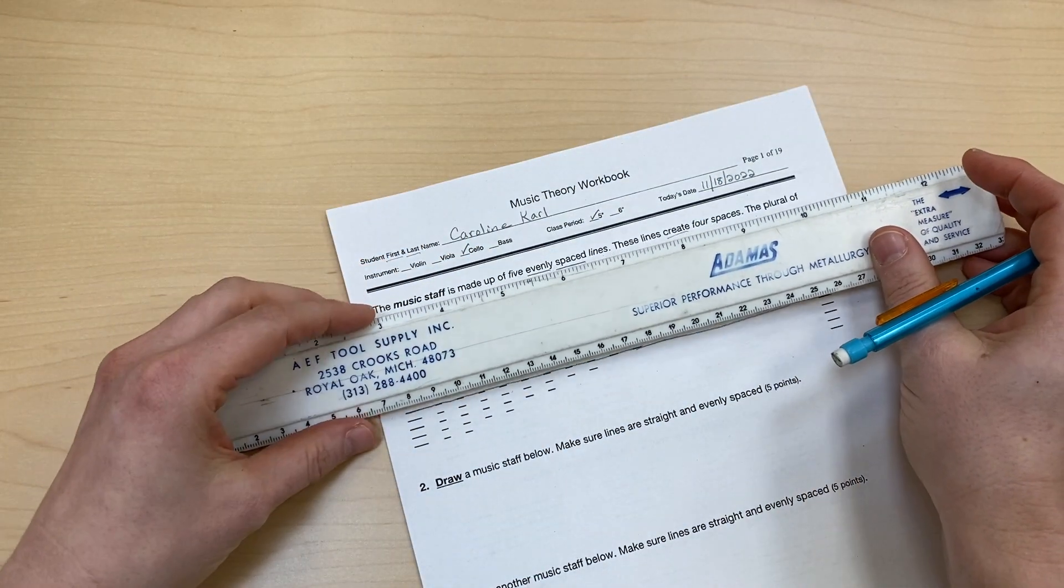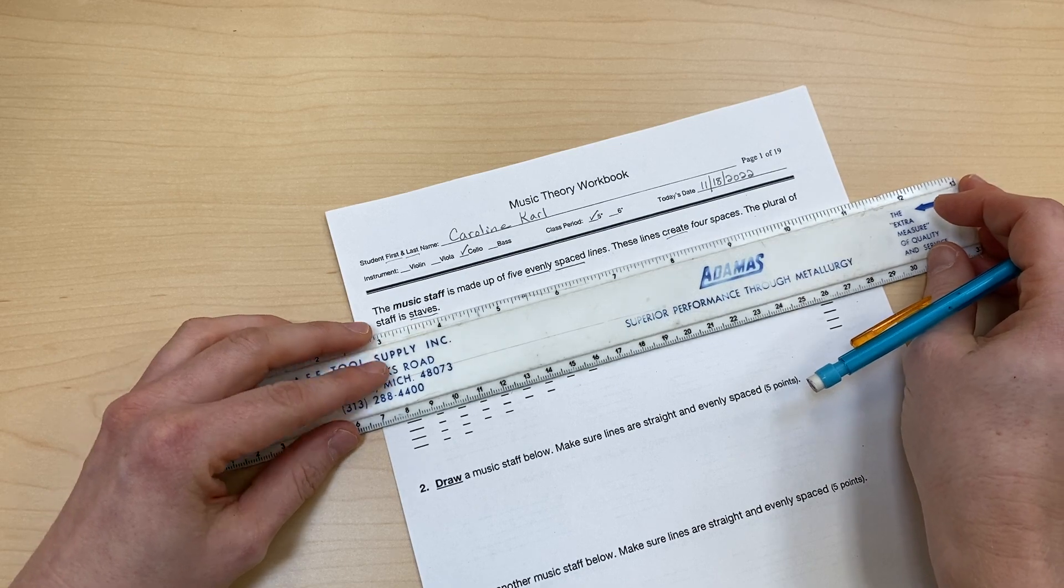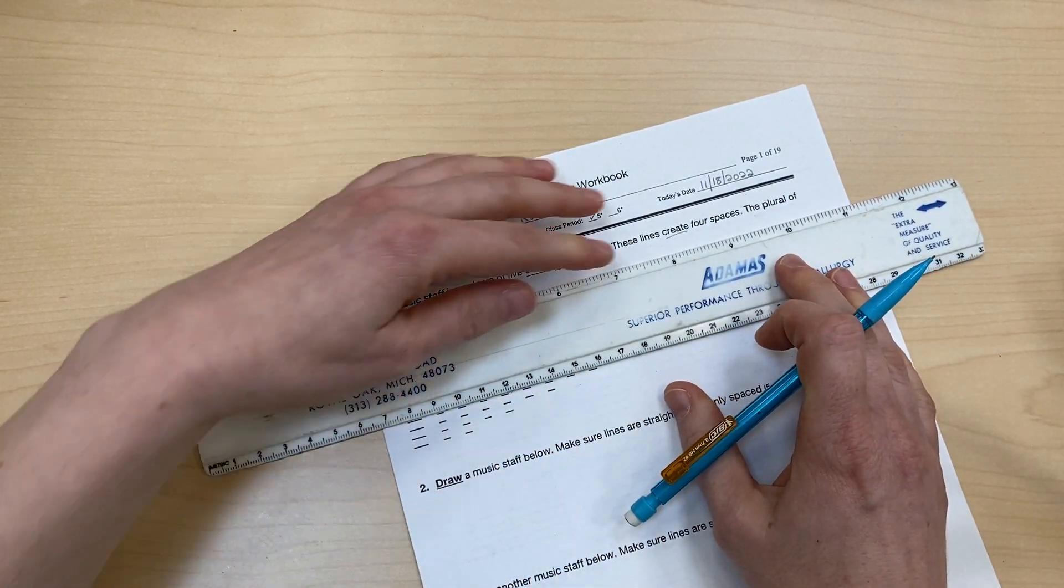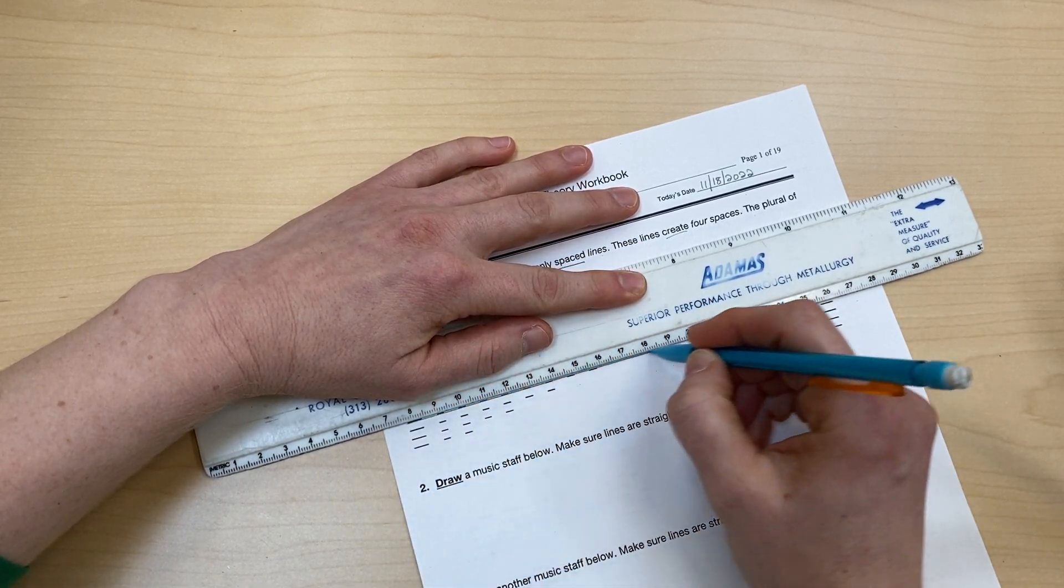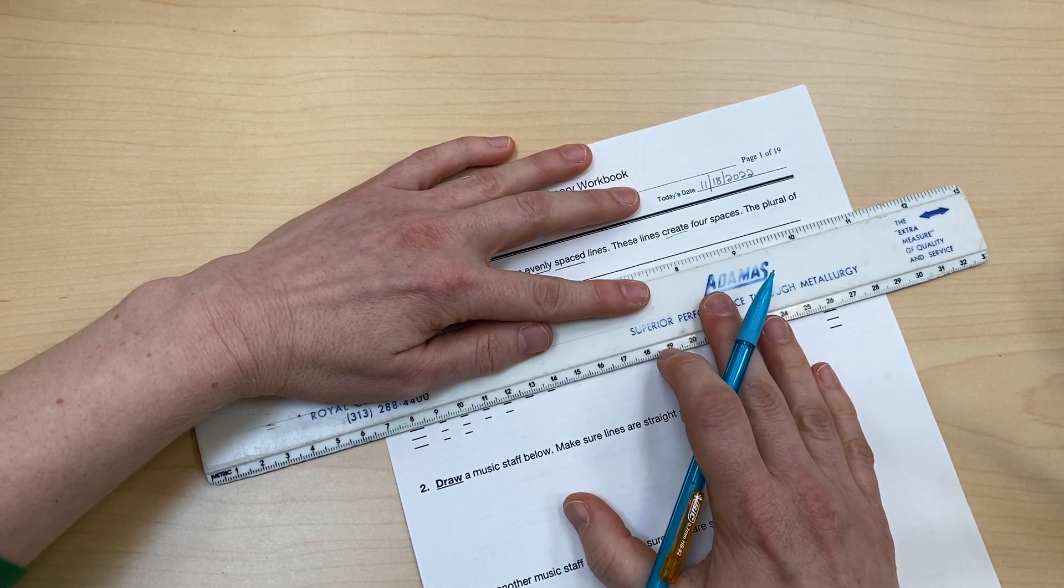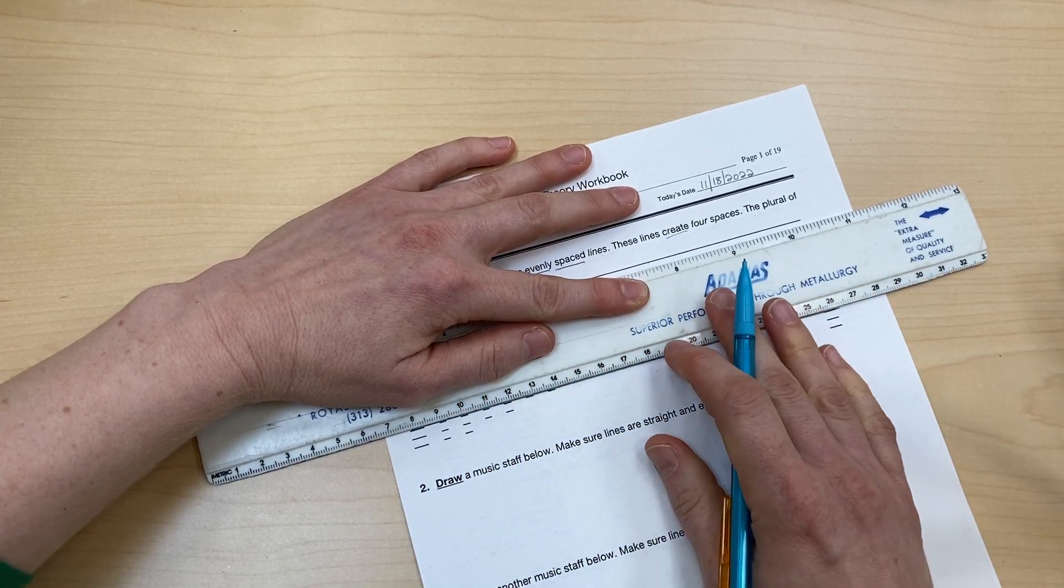I'm going to choose to use my ruler because that's what I have handy here. So I'm going to line this up, and I'm going to make sure that my lines are straight. And I'm going to do that. And now I'm going to go down to the next set, line that up, and draw that across.